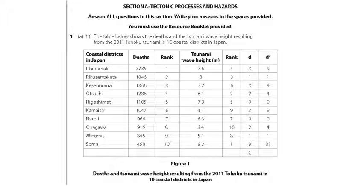Question one is going to be about tectonic processes and hazards. In total, this is only worth 16 marks, so only a small proportion overall, despite all of the fantastic work that you've done. It's likely that the first four marks are going to be based on a resource of some type. We've got this table ranking the number of deaths and the tsunami wave height after the 2011 Tohoku tsunami. We can see the ranked values for the difference in the rank D and D squared.